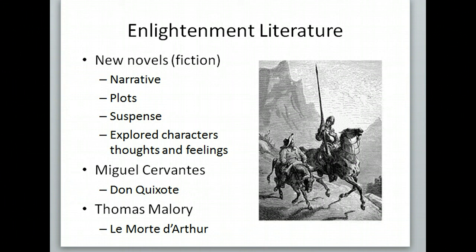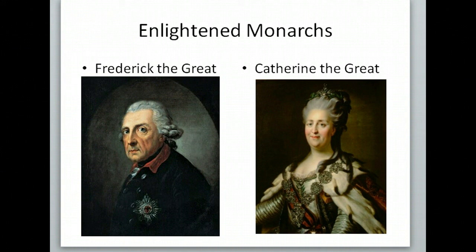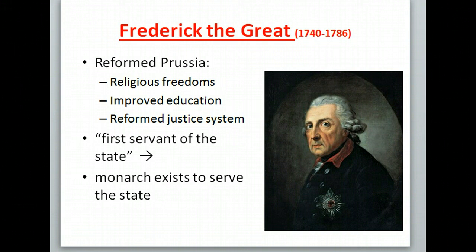Flipping to the back side of your page, we have two enlightened monarchs who try to take the ideas of the Enlightenment and use them in their reign to make reforms without limiting their power. Frederick is from Prussia and institutes some religious freedoms, thanks to numerous communications with Voltaire — they wrote 60 to 80 letters back and forth, and Voltaire actually visited Prussia. They improved the education system and reformed the justice system. Frederick becomes known as the 'first servant of the state,' meaning the monarch exists to serve the state — the big person serves the little people, as opposed to an absolute monarch where the little people serve the big person.